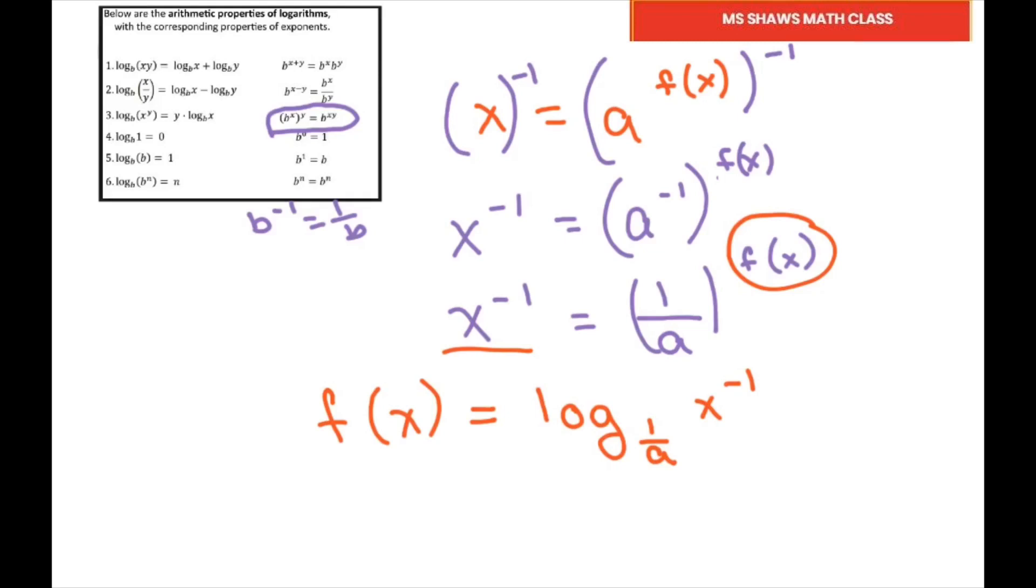So thus we have this is what F of X equals. Now if I want to do my power property, I'm going to pull this negative 1 in front so I have F of X equals negative log. You're just using your power property, 1 divided by A to the value of X.